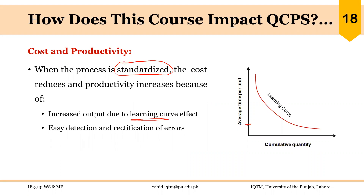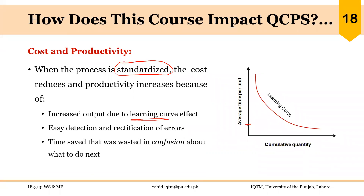Easy detection and rectification of errors: once the standard steps are followed, we can easily identify where problems are occurring and correct them. Time saved that was wasted in confusion about what to do next is also very important. If we have not defined the method of performing a task, the worker is not sure how to perform it or what comes next, so a lot of time is wasted in confusion. If we have defined the process and trained the worker in following those steps, then this time wasted in confusion is avoided.